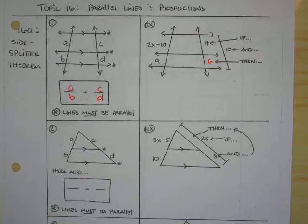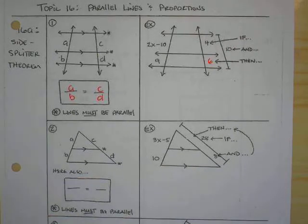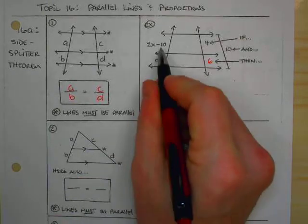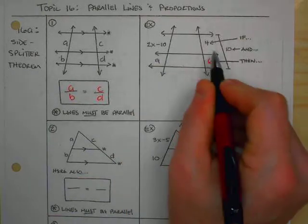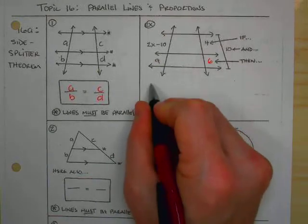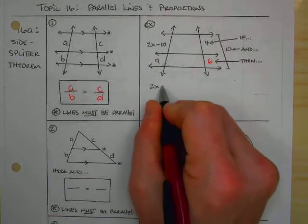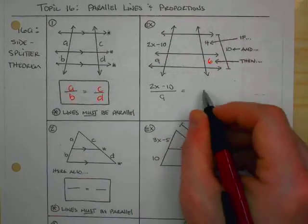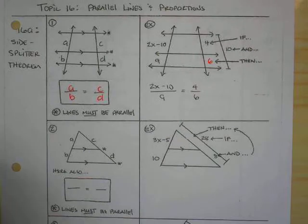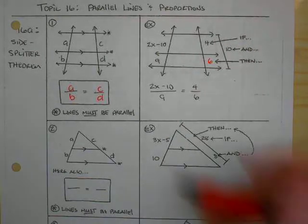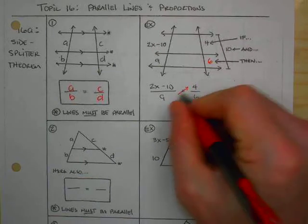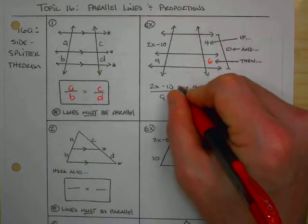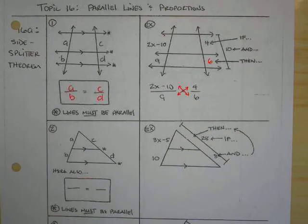Now, once we've got that, we have everything we need to set up our proportion and solve for X. So the way that I would set this up here is I would say this would be A, this would be B, this would be C, this would be D. So we're going to say 2X minus 10 over 9 is equal to 4 over 6. Now remember, to solve any proportion, we need to cross multiply.